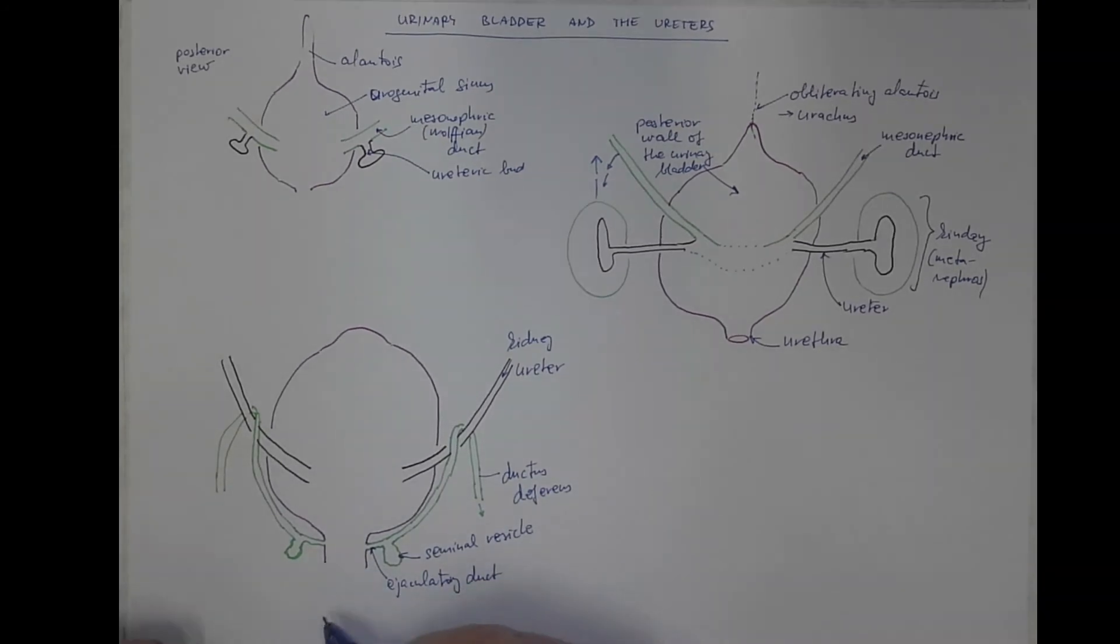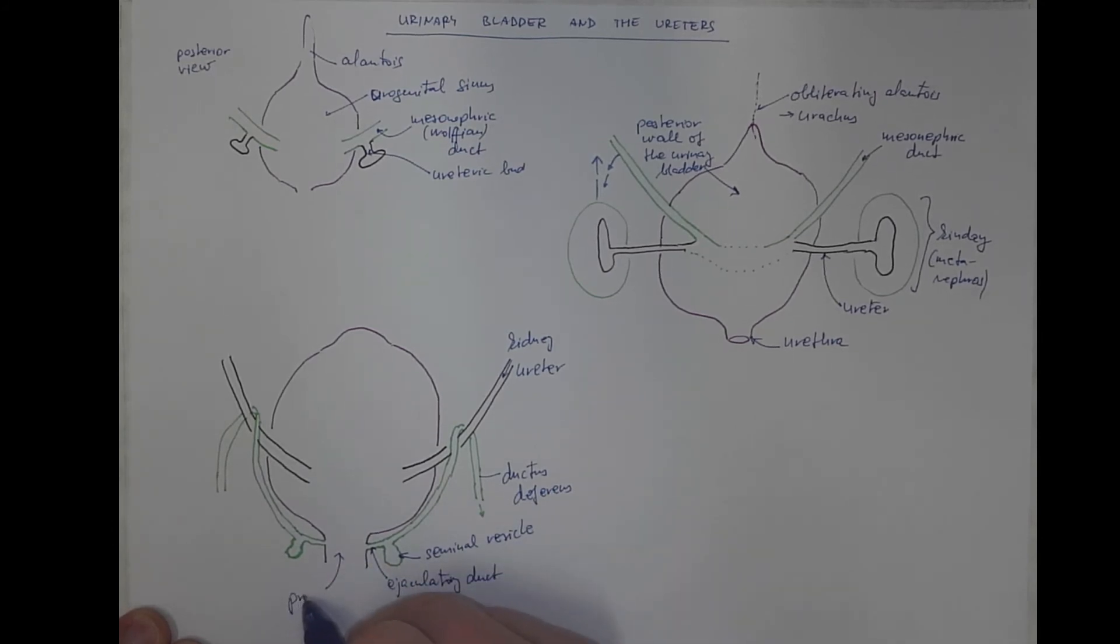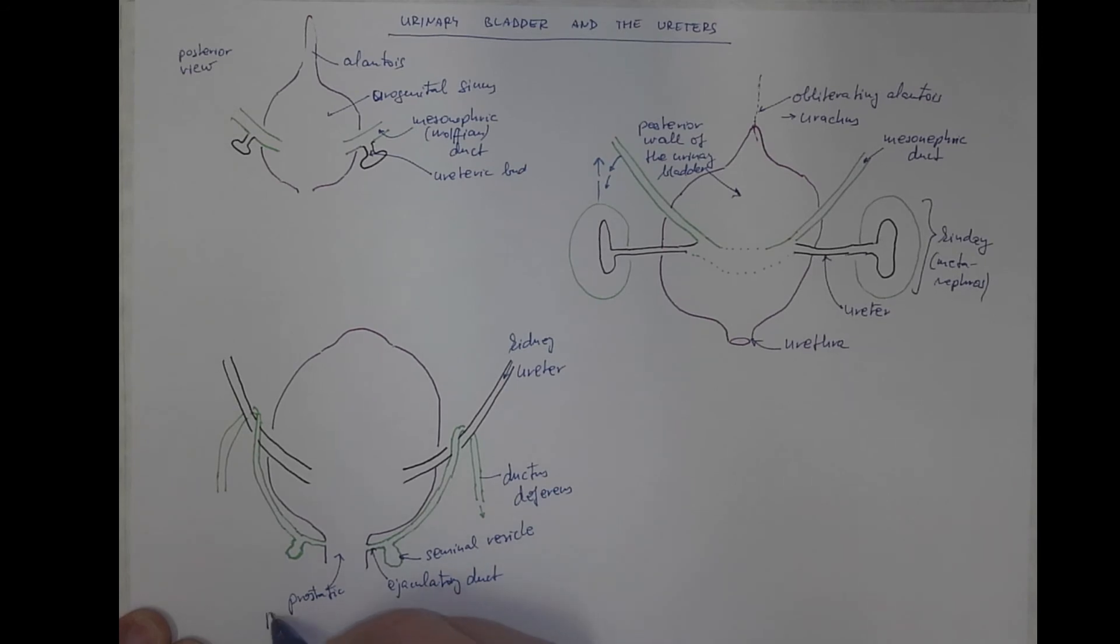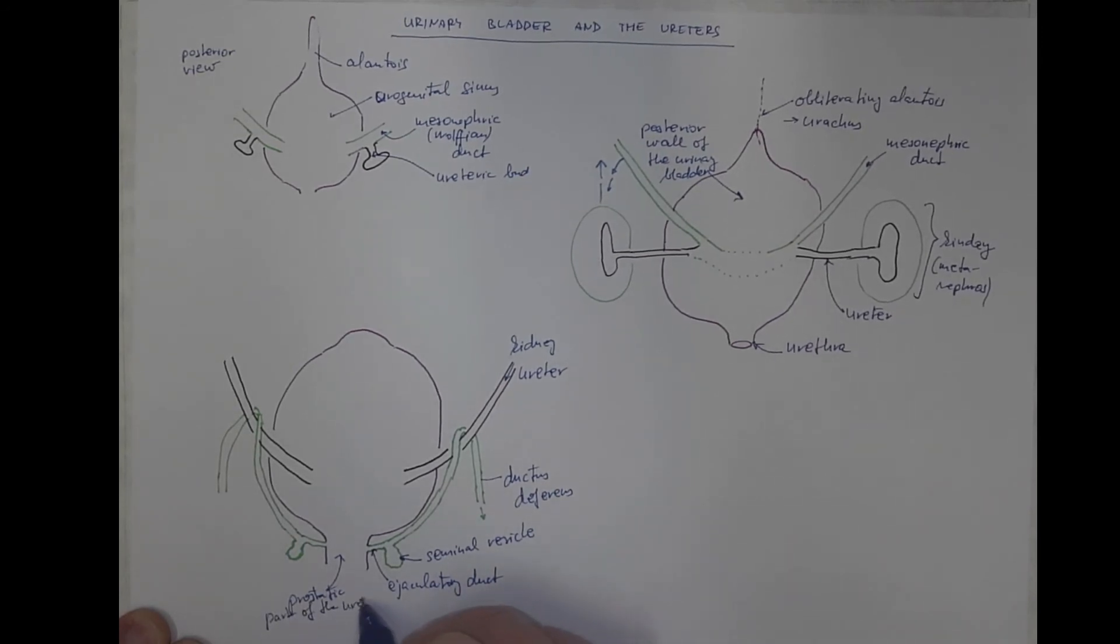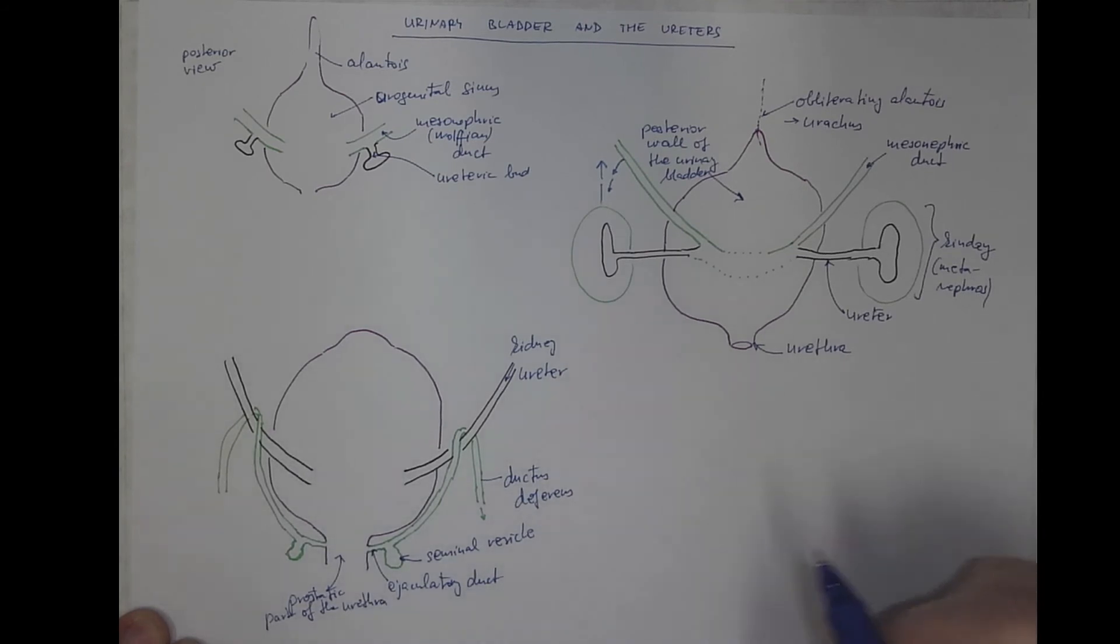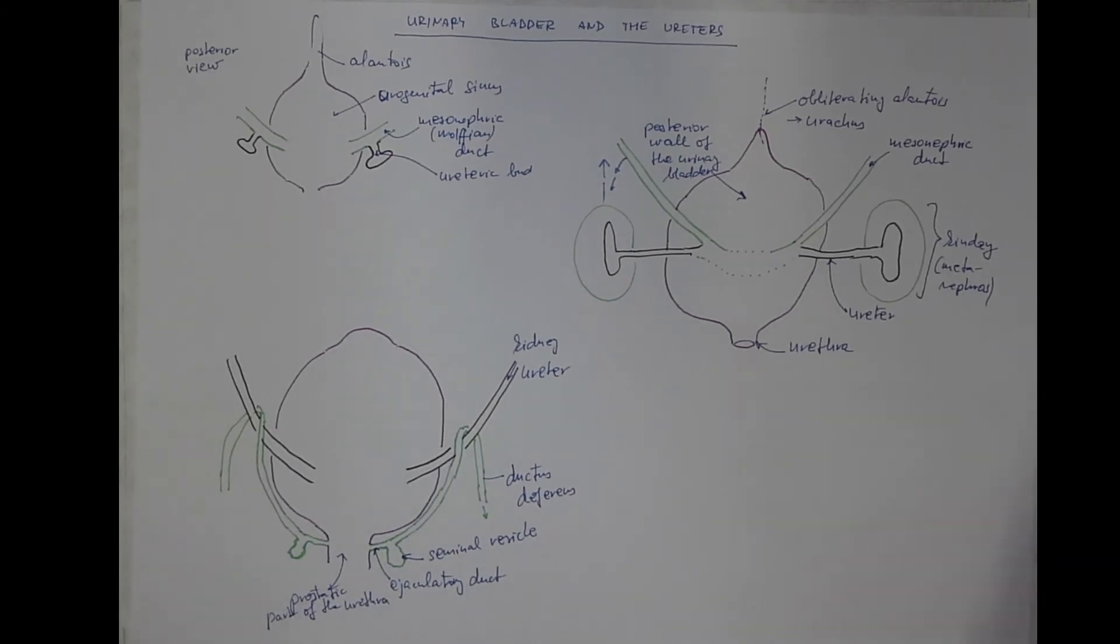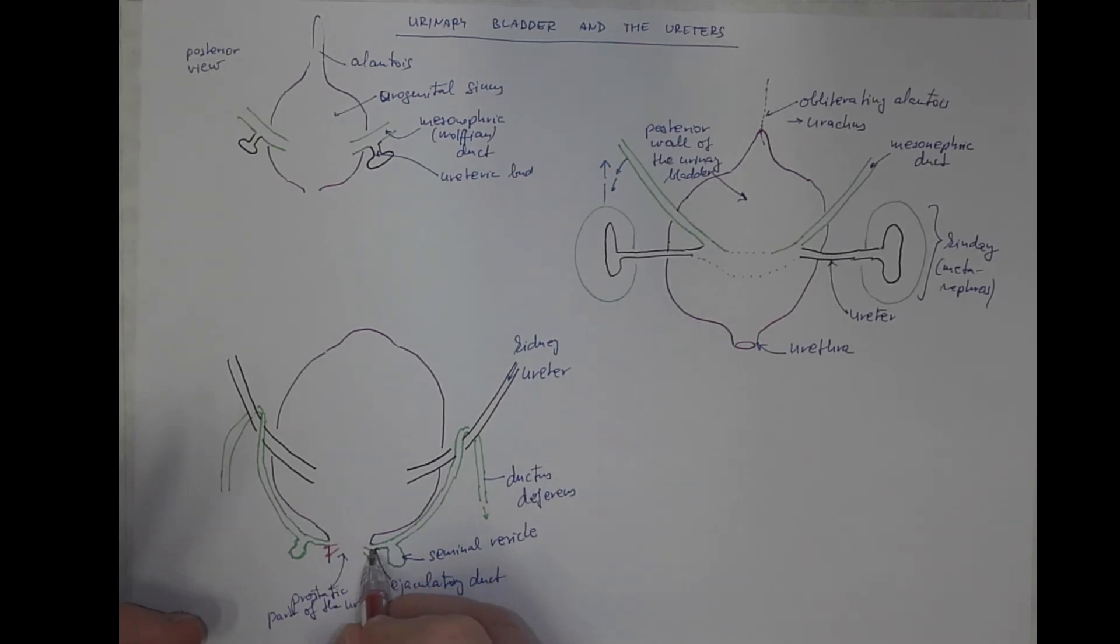Which enters, which opens into the prostatic urethra. Right, but where is the prostate? The prostate is a series of glands that proliferate from the wall of the prostatic urethra into the surrounding mesenchyme.